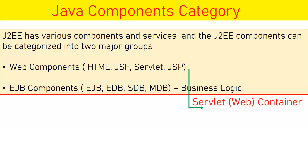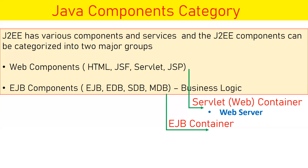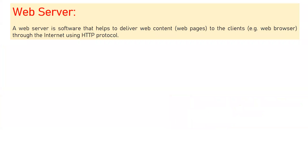Web components are executed in the servlet container, also called a web container. A web server has a servlet container — also called a web container — which executes the web component. When we talk about EJB components developed in advanced Java (Enterprise Java Beans), you need an EJB container, and your web server doesn't have this EJB container — that's why you need an application server. For web components you need a web server with a servlet container; to execute business logic you need an EJB container, which is only available in an application server.